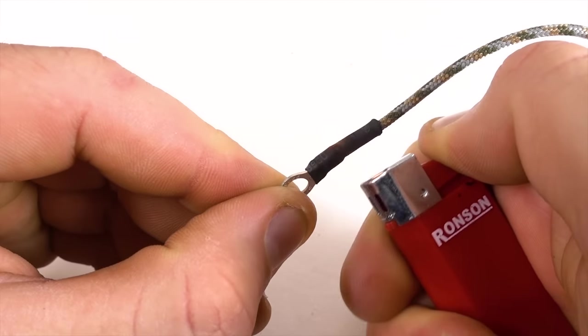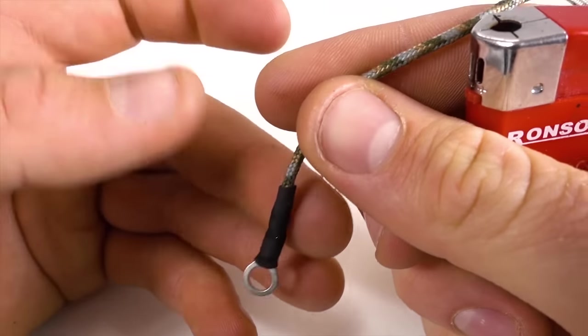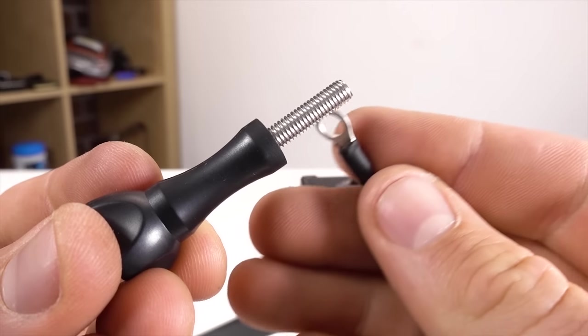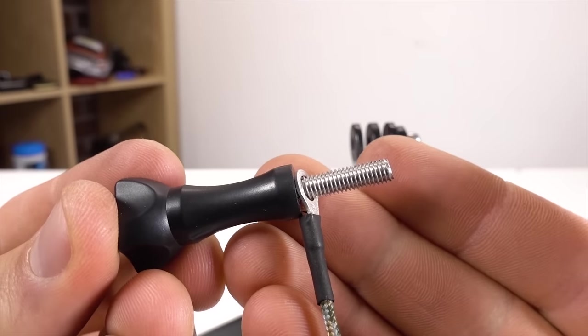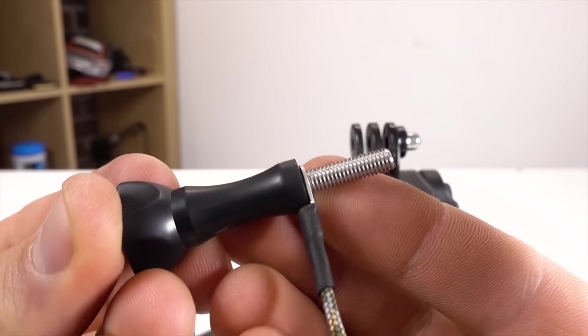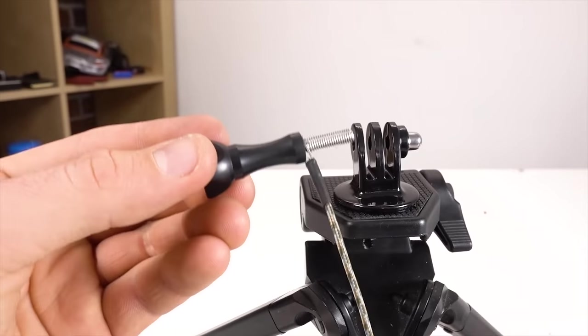And with that it's finished. It's a super simple tether. In order to use it you simply pass your GoPro bolt through the electrical connector before you mount your camera.